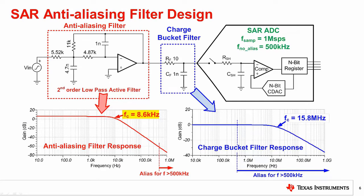This slide shows a typical SAR input design with an anti-aliasing filter. In this case, a second order active filter is used. The cutoff for this filter is set to 8.6 kilohertz, so signals above the Nyquist frequency will be attenuated by at least 60 dB.